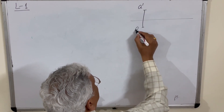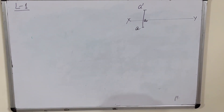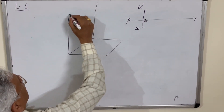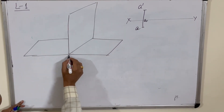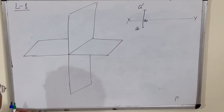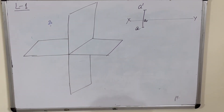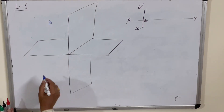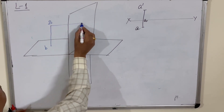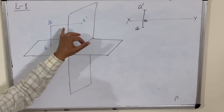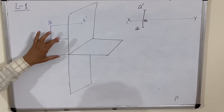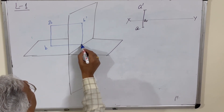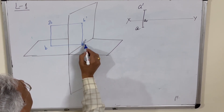Let us take another example — a point in the second quadrant. Drop a perpendicular from point B onto the horizontal plane and onto the vertical plane to get the plan and elevation. The projection on the vertical plane (perpendicular to VP) is b′ — that is the elevation. The plan is small b. When you join them, you get the ground point B0 on the ground line.